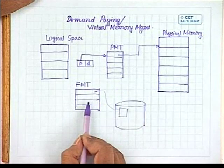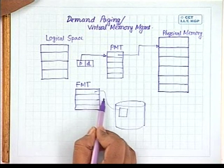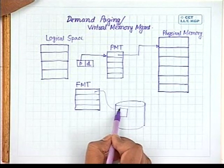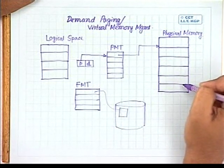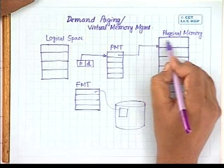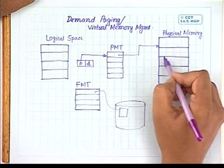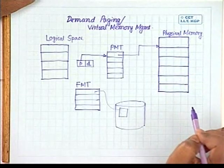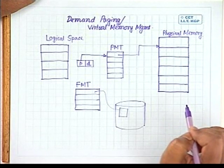Following the page fault interrupt, the operating system checks the file map table to get the address of the page on the secondary storage, and then loads the page into a free frame in main memory. It may happen that no frame in physical memory is free, in which case one of the existing pages must be replaced to make room for the new page. This leads to different page replacement algorithms.